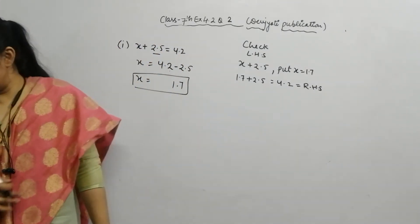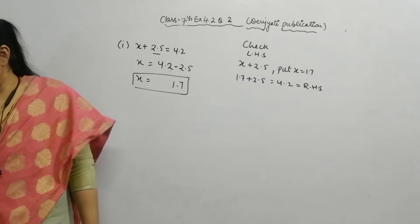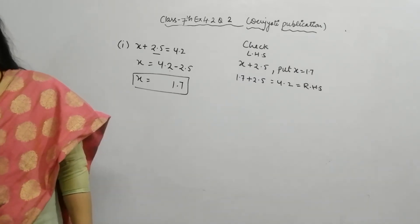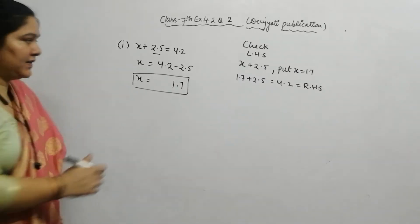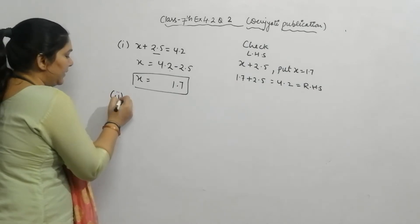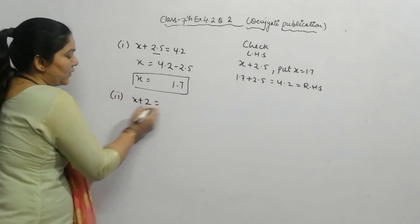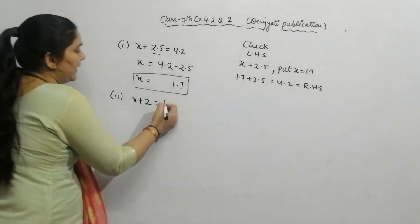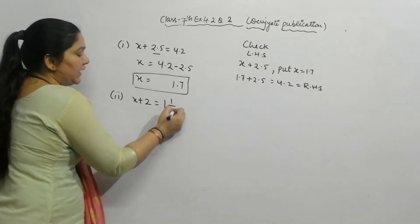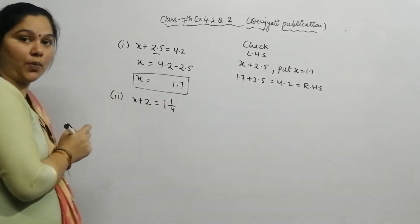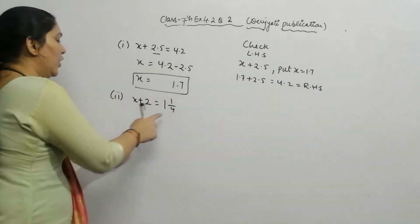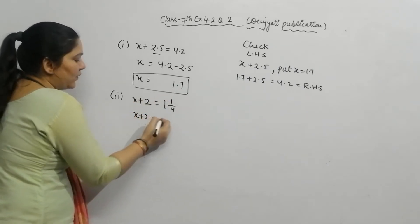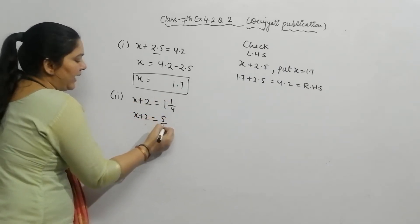Let's start Part 2. Part 2 is: x plus 2 is equal to 1 and 1 by 4. First, convert the mixed fraction to an improper fraction: 4 times 1 is 4, plus 1 is 5, so it becomes 5 by 4. Now the equation is: x plus 2 equals 5 by 4.